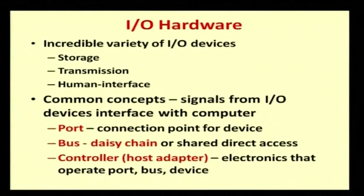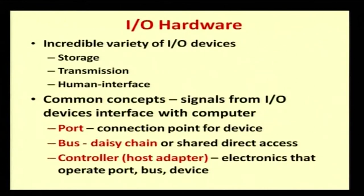The next thing is the user interface. If I type A, B, C and it prints D, E, F, the keyboard is not working properly. Human interface and storage are both required. Transmission is also required — if I type A, B, C, it should type only A, B, C and not otherwise. The human should check the correctness of the system. Other common concepts in I/O hardware: signals from I/O devices interface with the computer. How do we interact with the I/O device? Consider the keyboard with the operating system.